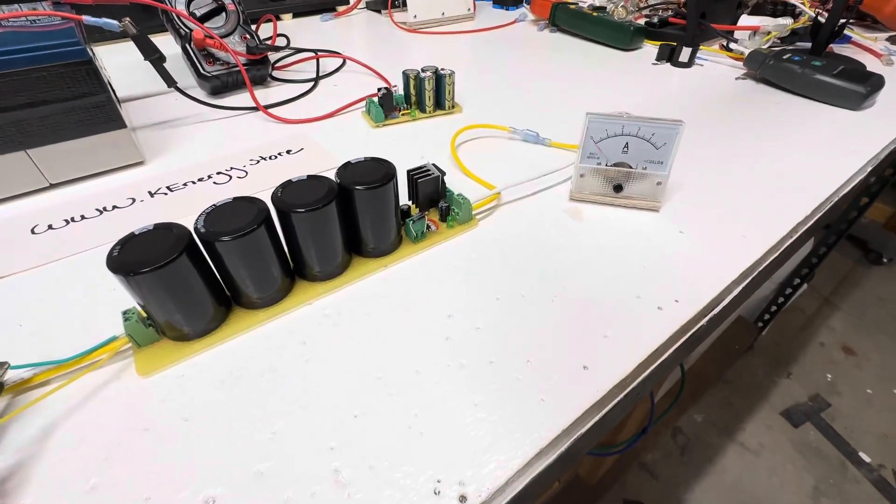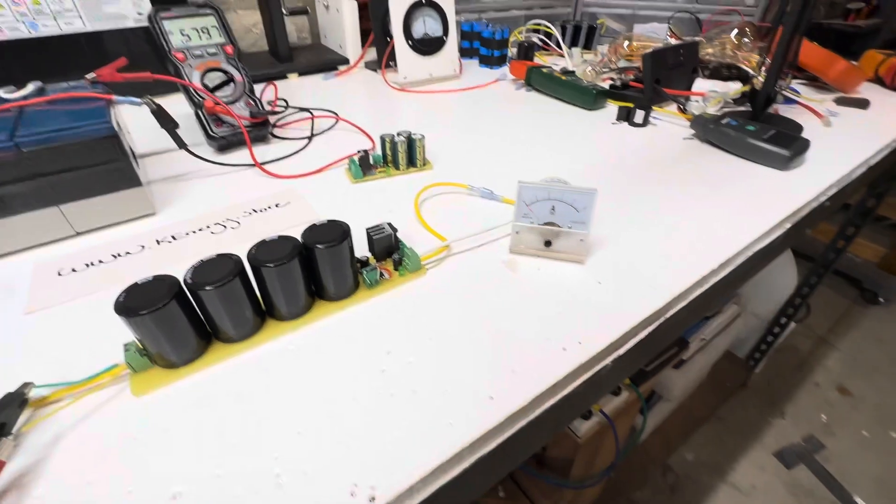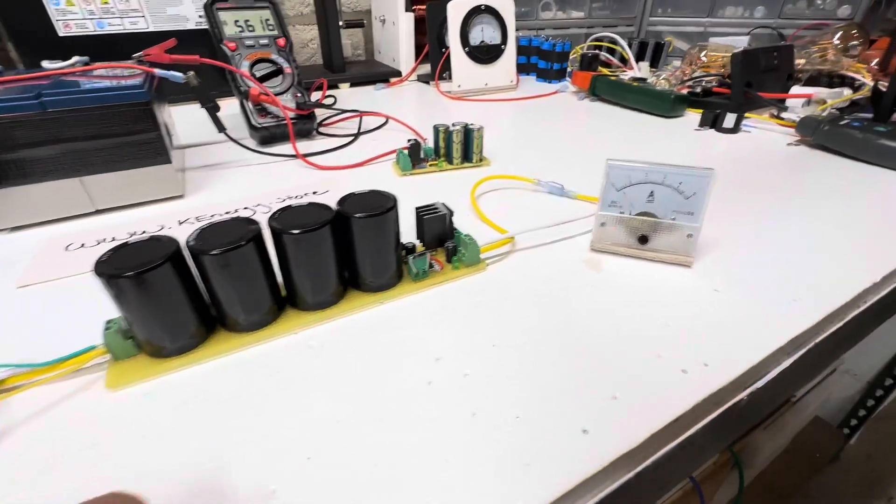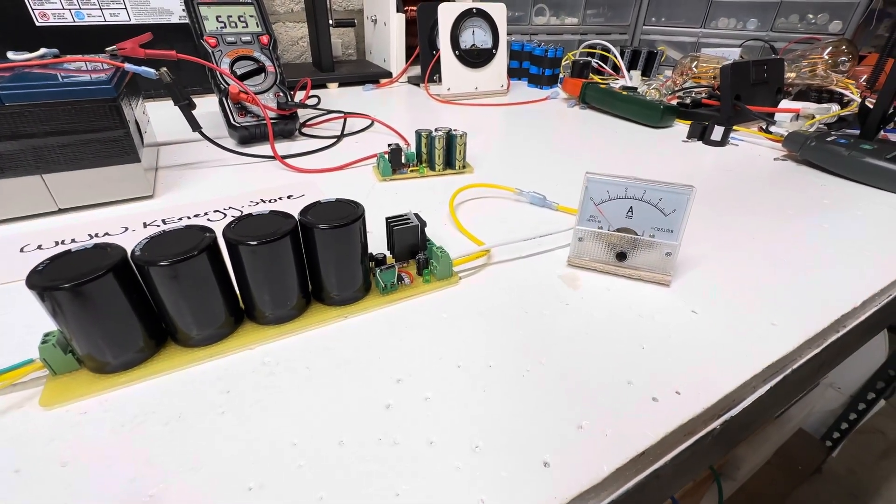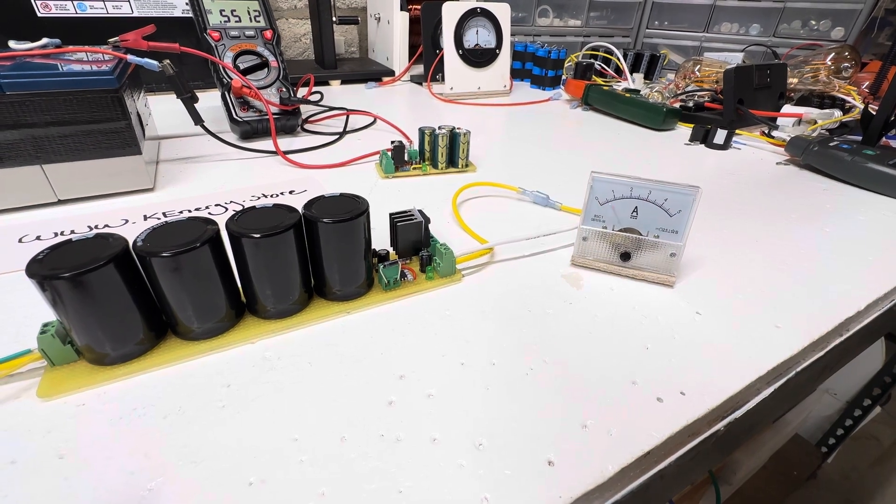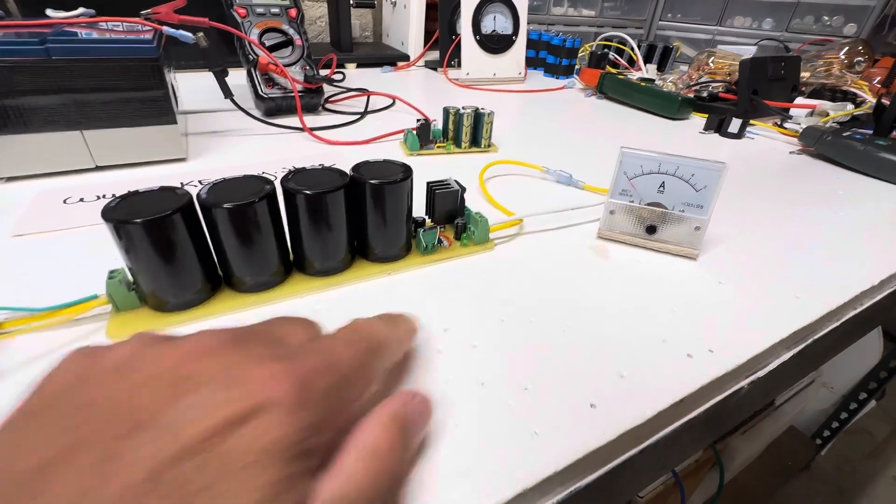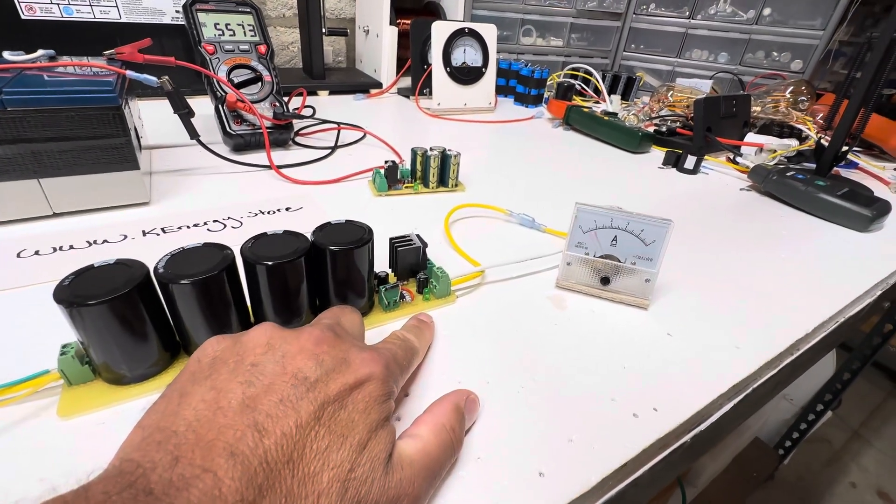And it's pulsing out a full 5 amps, probably quite a bit more, but that's what this meter can recognize. You can see the little LED trigger as it fires.